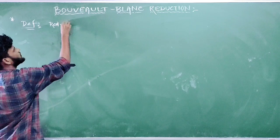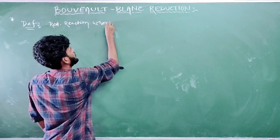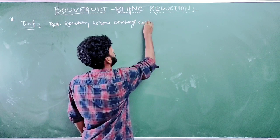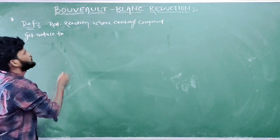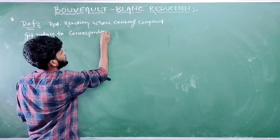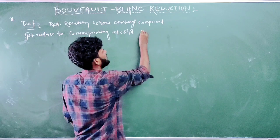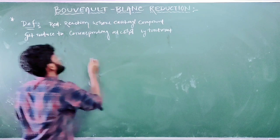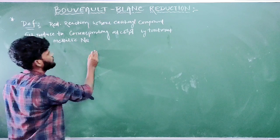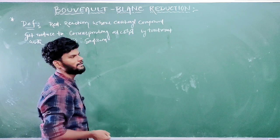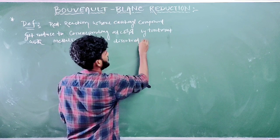The carbonyl compound gets reduced to corresponding alcohols by treatment with metallic sodium — sodium metal — dissolved in ethanol solvent. This is the definition.